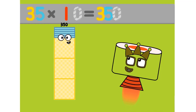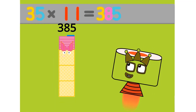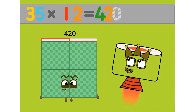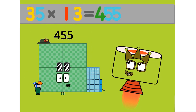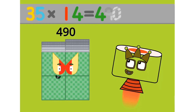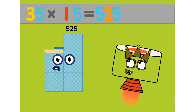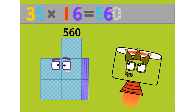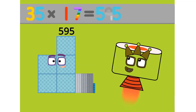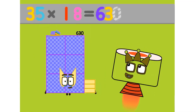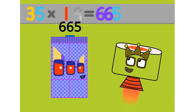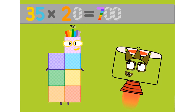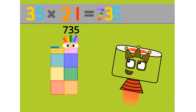35 times 10 equals 350. 35 times 11 equals 385. 35 times 12 equals 420. 35 times 13 equals 455. 35 times 14 equals 490. 35 times 15 equals 525. 35 times 16 equals 560. 35 times 17 equals 595. 35 times 18 equals 630. 35 times 19 equals 665. 35 times 20 equals 700. 35 times 21 equals 735.